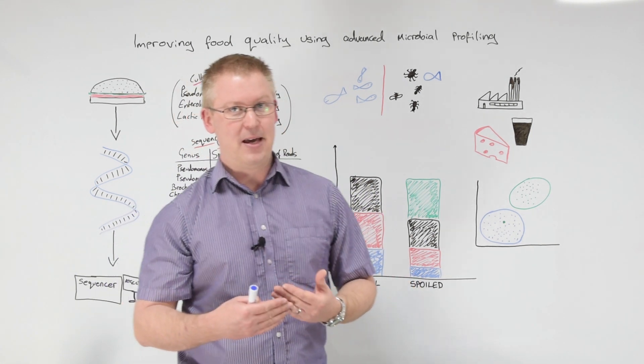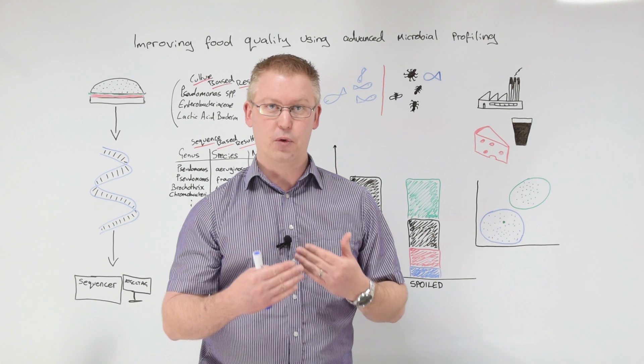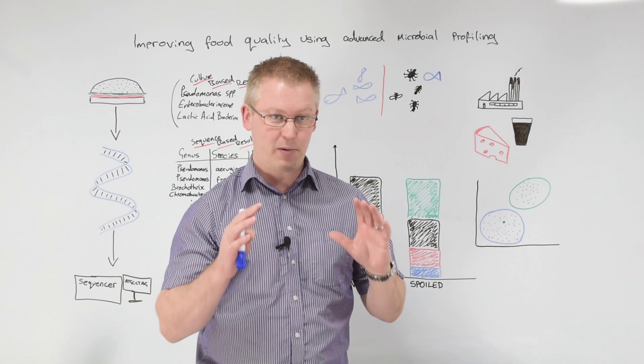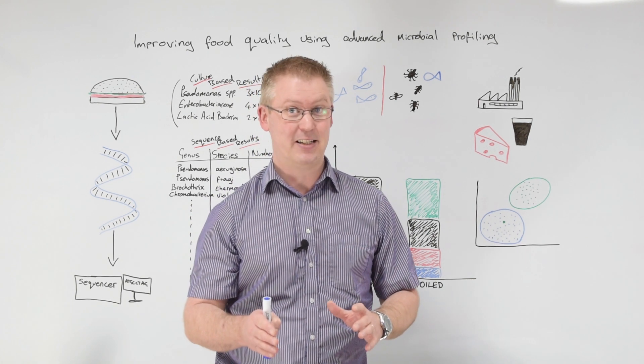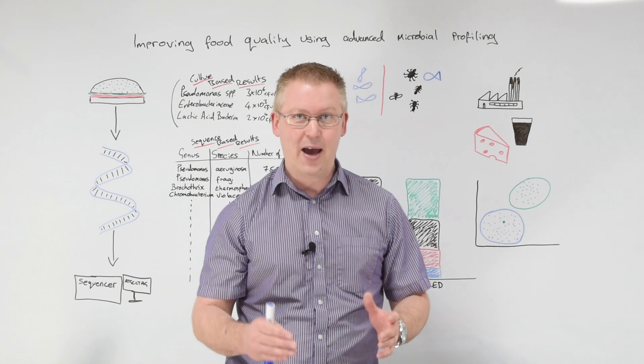So with AMP, you can start to do that for foods. You can start to say, okay, well, why am I looking at a population I'm not expecting to see in this particular product? Where has that come from?